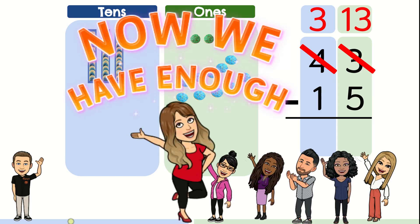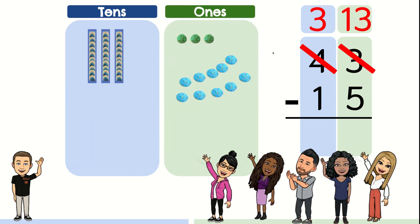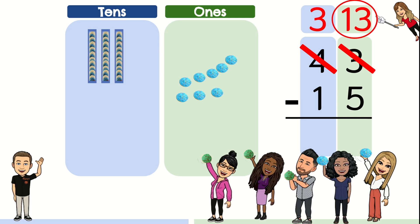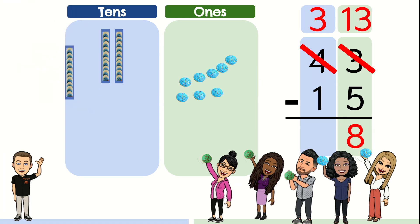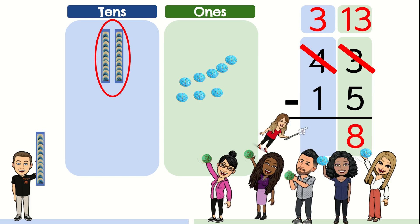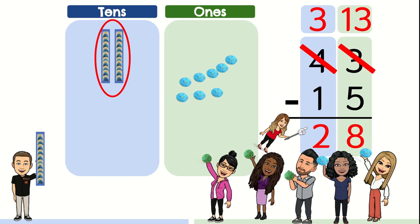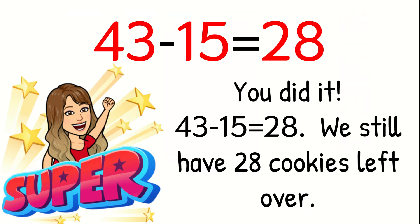Now we have enough for our friends. Now we can start solving the problem. 1, 2, 3, 4, 5 — we gave our friends five cookies. 13 minus 5 equals 8. Now we move to the 10s place. We just have one friend that wants one box of 10. How many 10s are left? Two. We had three 10s minus one 10 equals two 10s. 43 minus 15 equals 28. We still have 28 cookies left over. Good job.